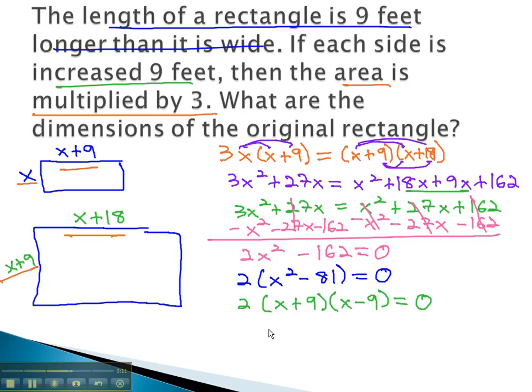We can now set each factor equal to 0, and x plus 9 equals 0, or x minus 9 equals 0. We can quickly solve by subtracting 9 to get x equals negative 9, or adding 9 to get x equals positive 9.